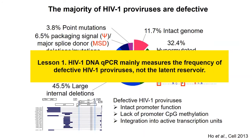So most of these proviruses are defective. However, we found that these defective proviruses have intact promoter functions and are capable of making viral protein productions. They do not have any promoter CpG methylation or epigenetic silencing markers, indicating they are fully competent to produce viral particles and induce a CD8 T cell response and immune activation. So if we only take HIV DNA quantification purely to measure the size of the reservoir, it may not be correct, because we will be measuring the vast majority of these defective proviruses.